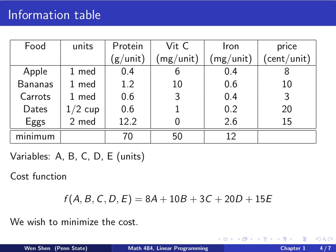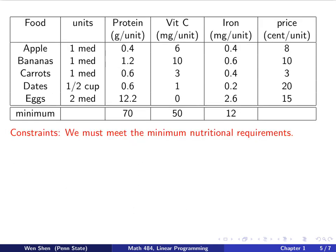Our goal is to minimize the cost function. Note that if we chose all of A, B, C, D, E to be 0, the cost would be 0 — but that's not a smart choice because then you'd be starving. The last row of the table has constraints: there is a minimum intake required for all three nutrient groups. We must choose a solution A, B, C, D, E such that the minimum nutritional requirements are met.